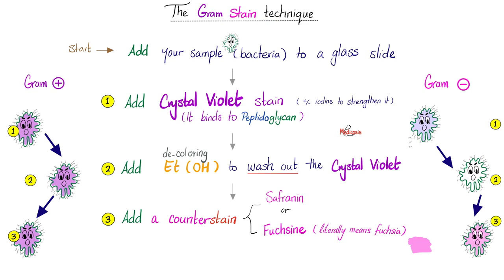Here is how you do the gram stain technique. You add your sample, which contains bacteria, to a glass slide. Then add crystal violet stain, which is purple — you might add iodine to strengthen it. Crystal violet binds the peptidoglycan. The gram-positive will become purple, and the gram-negative organism will also become purple but less so.